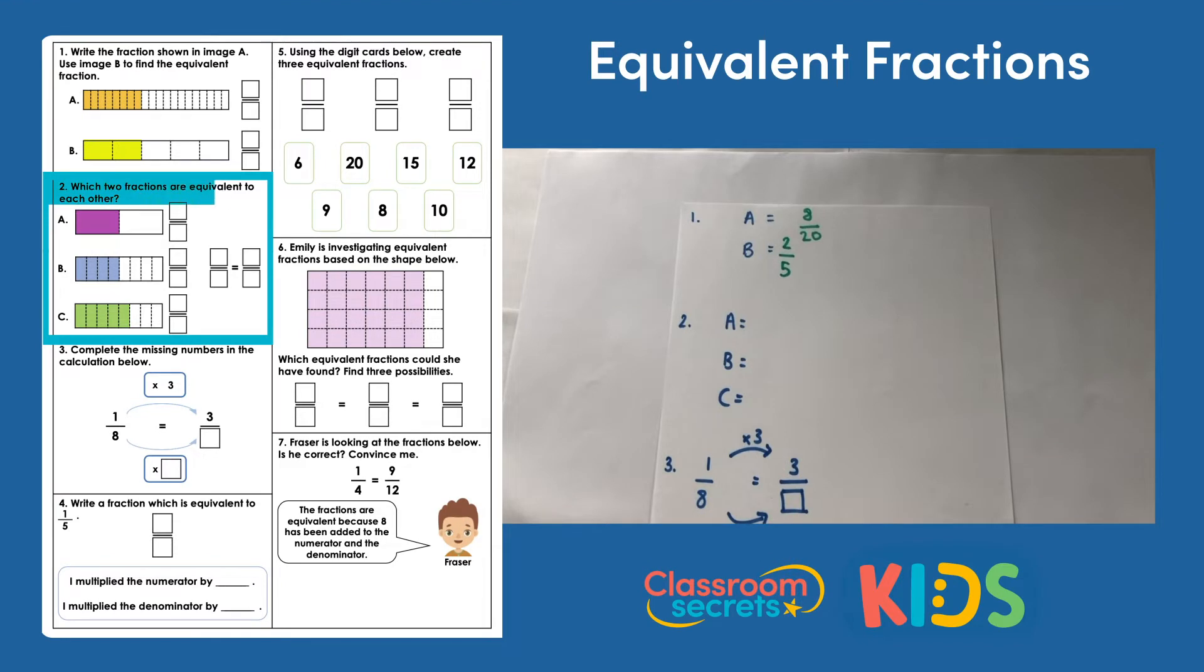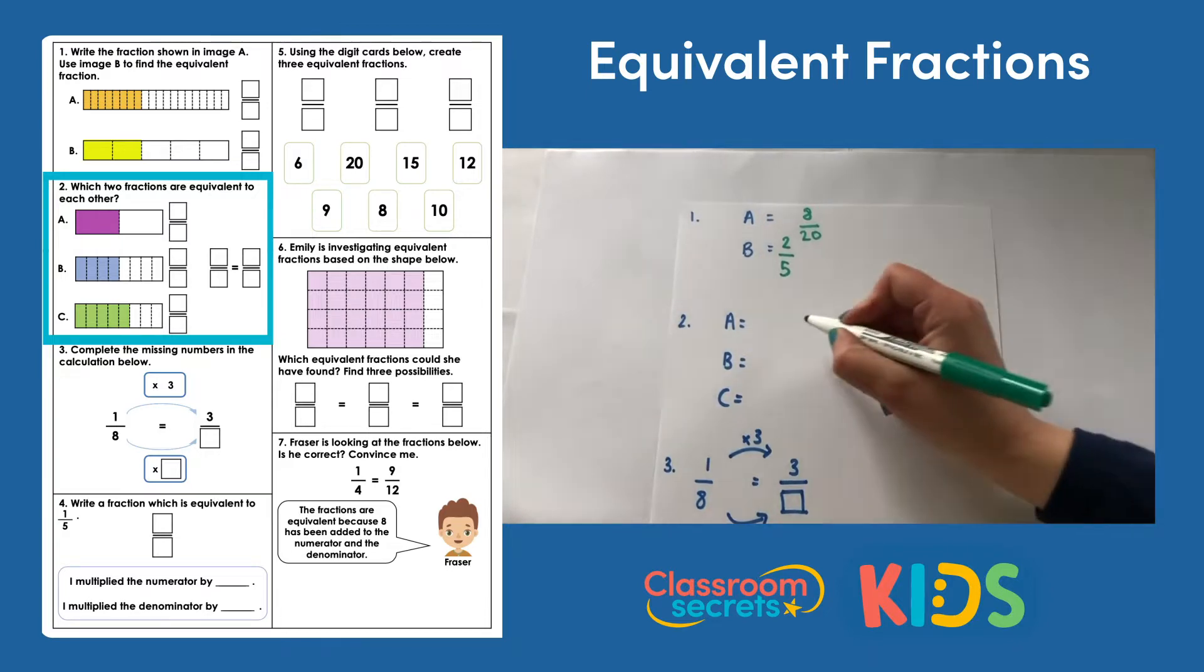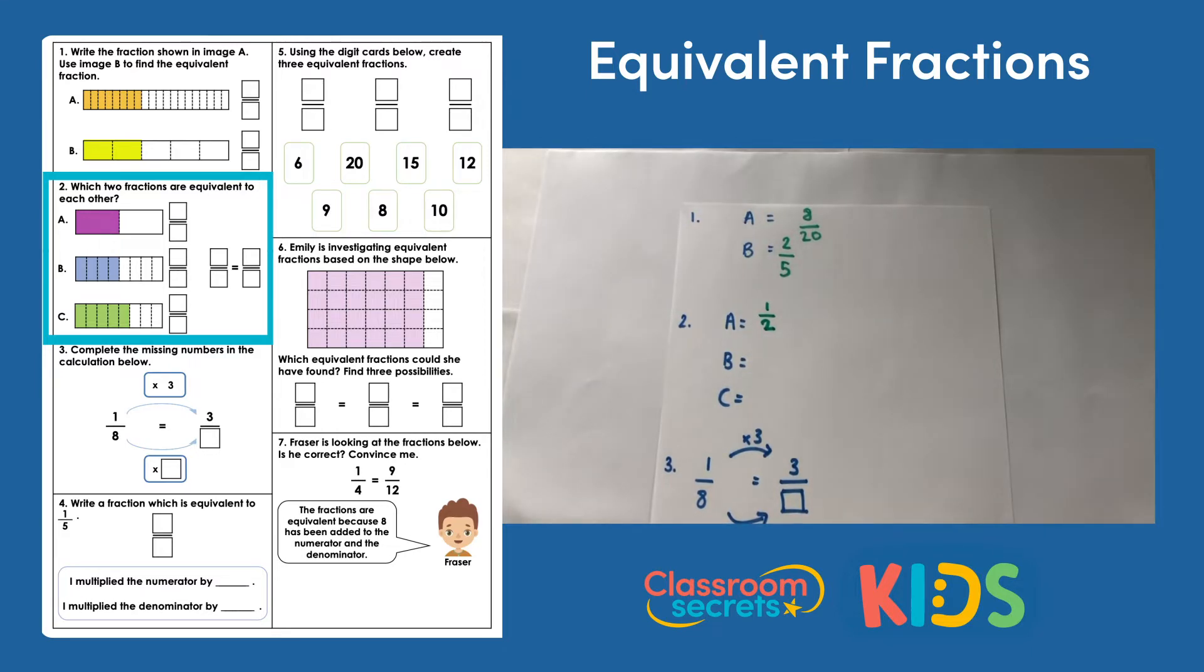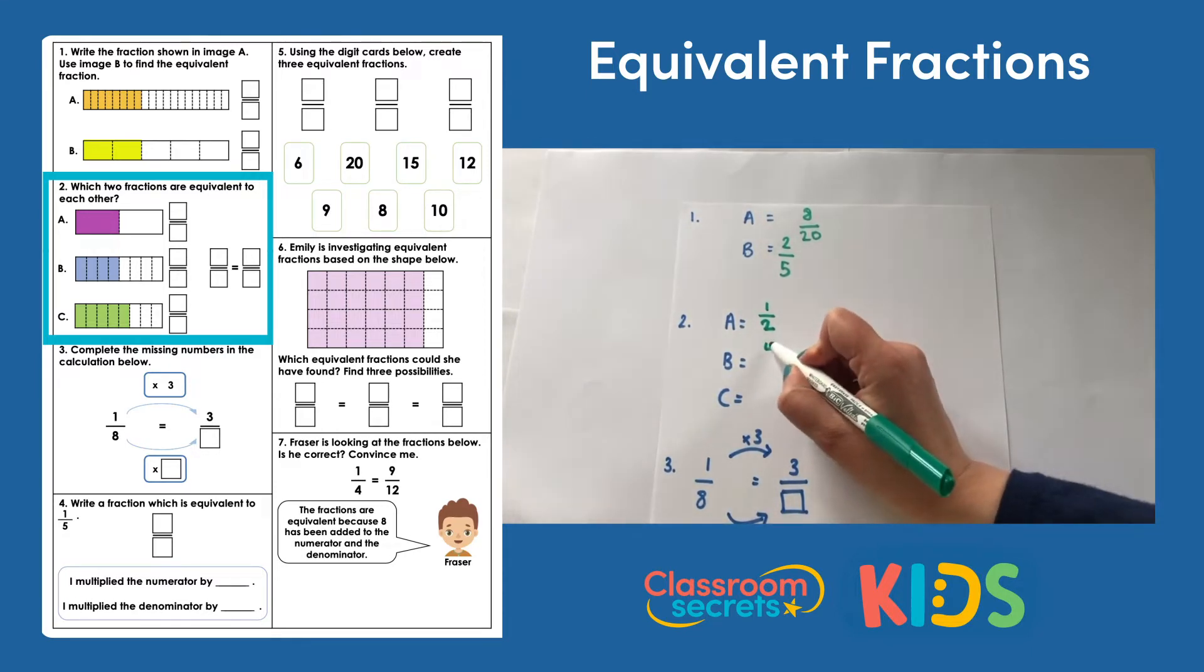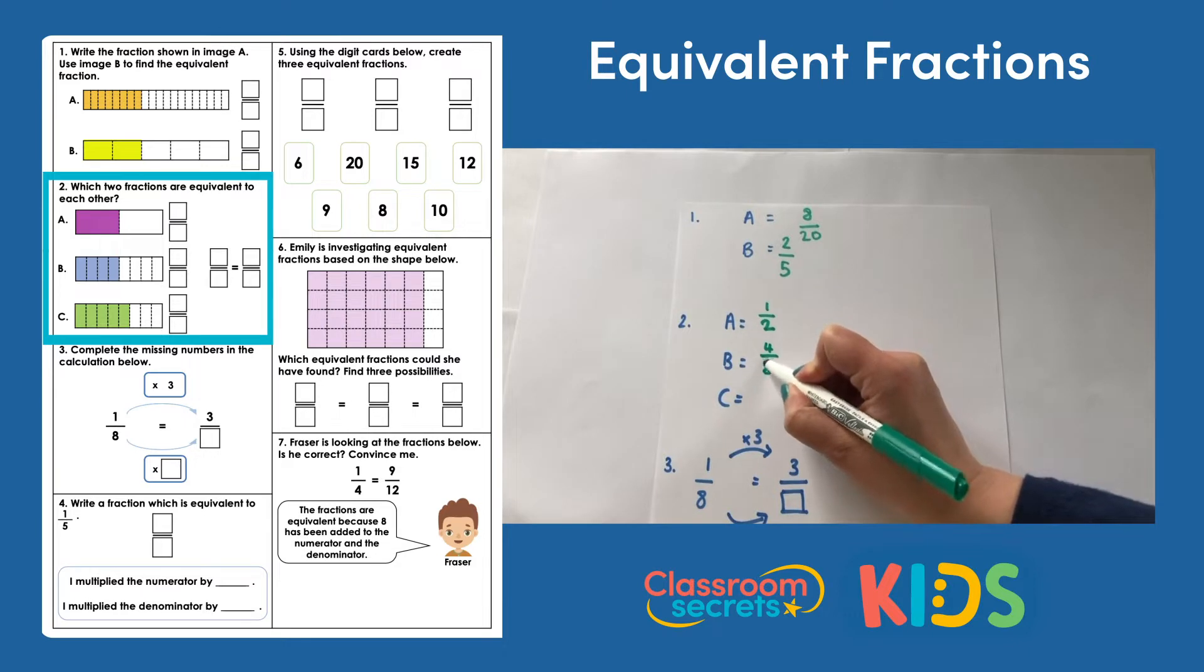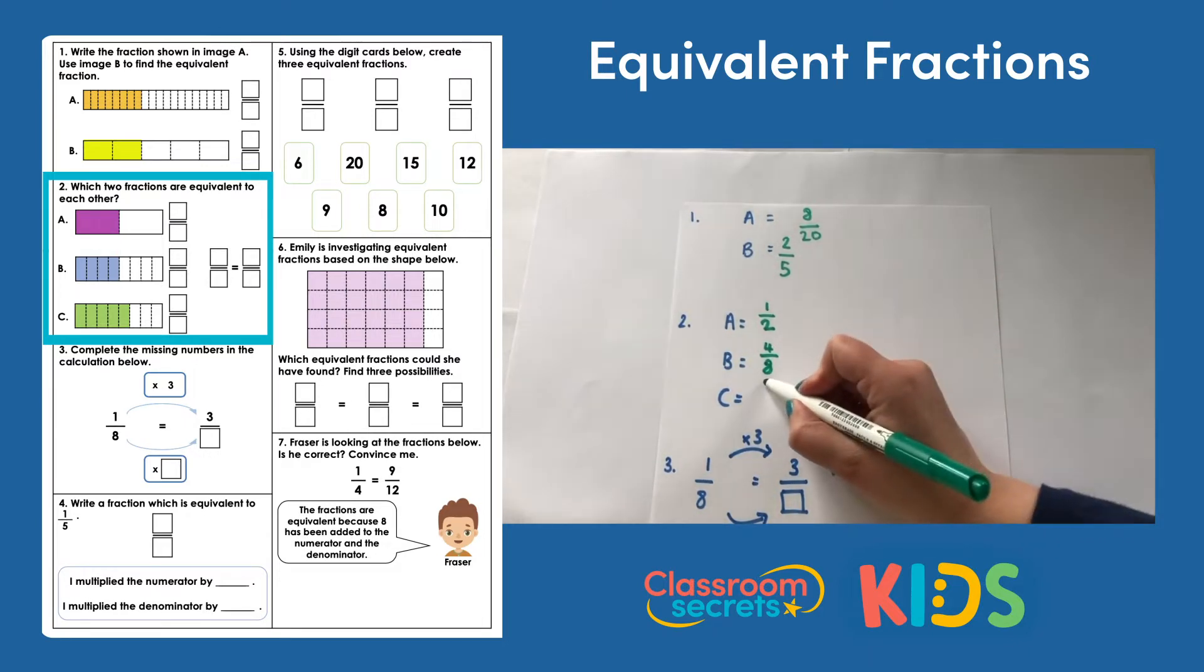Question 2. Which 2 fractions are equivalent to each other? First of all we need to write which fraction is represented in A and B and C, and then we're identifying the 2 fractions which are equivalent. For A I can see that 1 part is shaded out of 2, so that represents 1 half. For B we have 4 parts shaded out of a possible 8, so that's 4 eighths. And then C we have 5 parts shaded out of a possible 8, so that's 5 eighths.